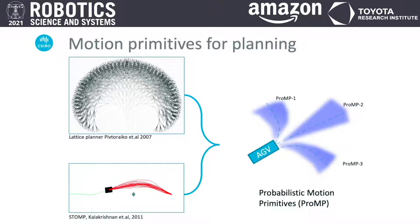Motion primitive based planners like lattice planners are fast and generate kinematically consistent paths, however they suffer from discretization overheads. On the other hand, trajectory optimization approaches can find optimal paths given enough time but require high sampling rates in cluttered environments, often making them infeasible for real-time hardware runs.